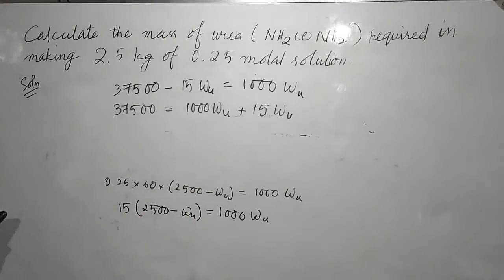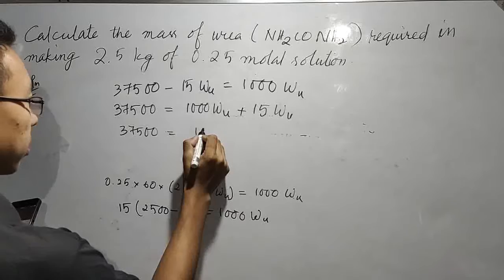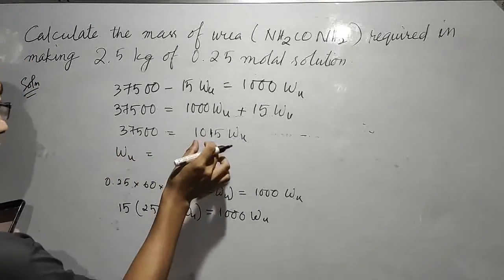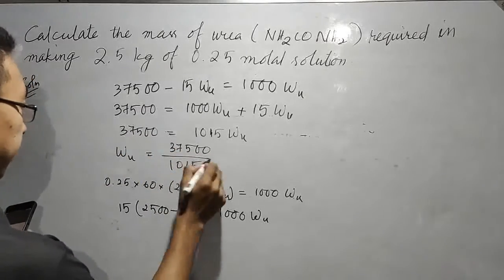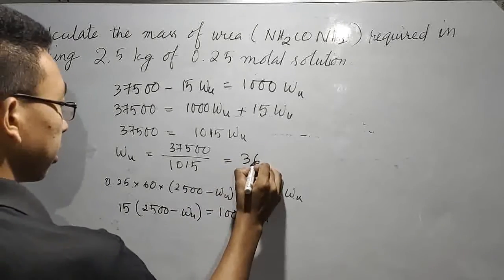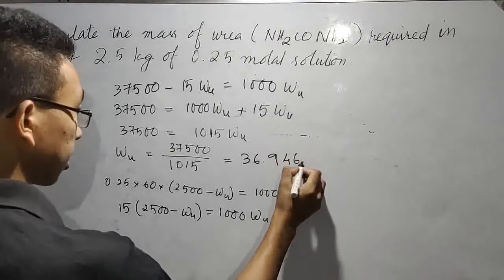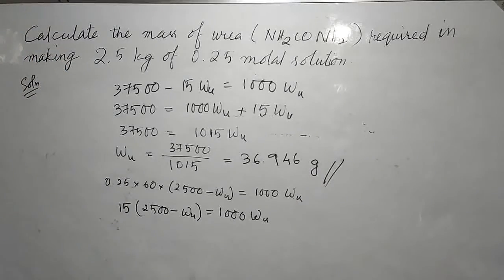W_u equals 37,500 divided by 1015, which will get you around 36.946 grams. So this is the mass of the urea.